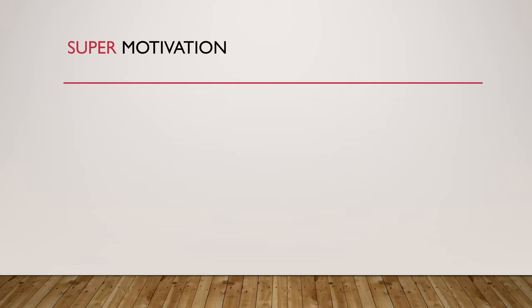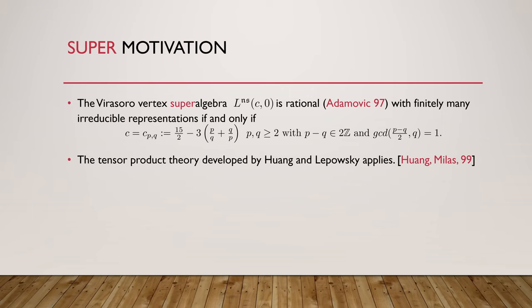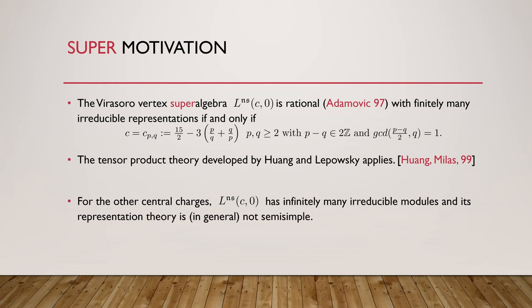We would like to answer a similar question but in the super setting. If we think of the N equals 1 super Virasoro vertex algebra, then Adamovich proved that this vertex operator superalgebra is rational if and only if the central charges are of this form, with P and Q in this discrete set. And Miles and Huang proved that the supergeneralization of their tensor product theory applies in this case.